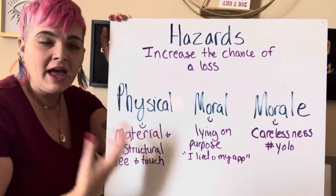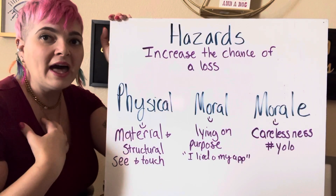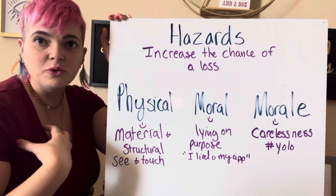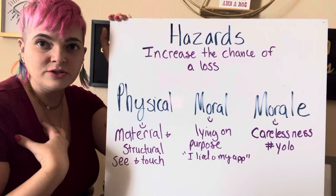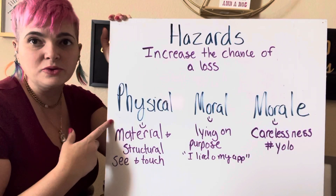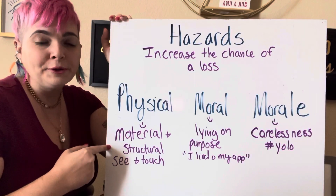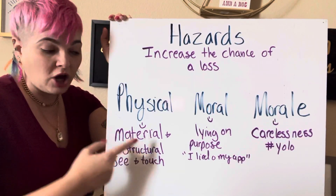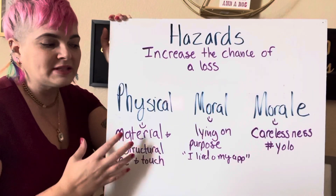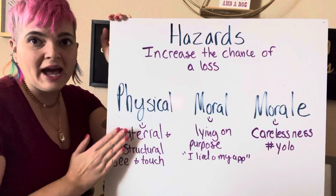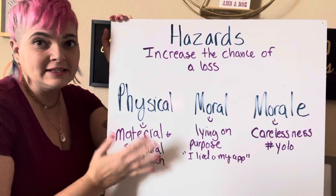Depending on whether you're learning health insurance versus homeowners, they take a different focus on physical. If you're talking about health or life insurance, physical is going to be like your physical body — your past medical history, smoking, drinking, anything that impairs or affects your body. For homeowners, physical hazard refers to things that are material and structural. It can appear in both contexts, so you may see it either way.